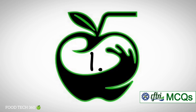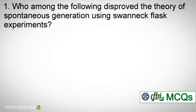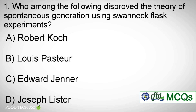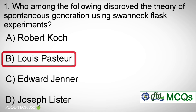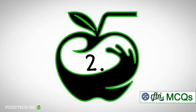Question number 1. Who among the following disproved the theory of spontaneous generation using Swan-neck Flask experiments? Options: A. Robert Koch, B. Louis Pasteur, C. Edward Jenner, D. Joseph Lister. Correct answer: B. Louis Pasteur.